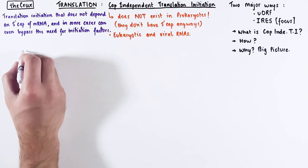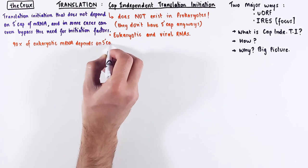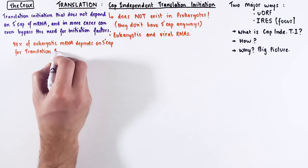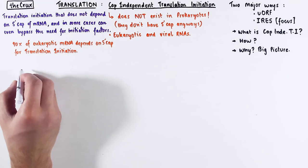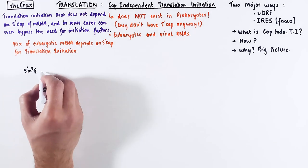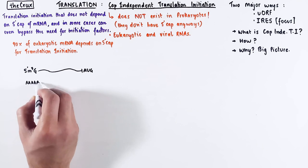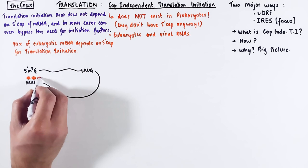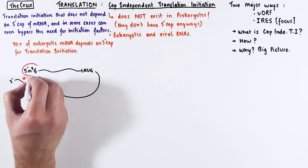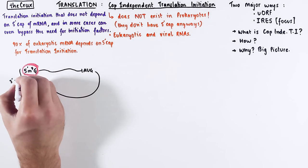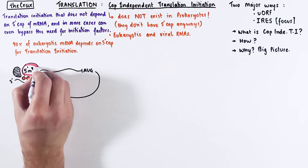We have discussed the canonical or typical translation initiation already, and 90% of the eukaryotic mRNAs depend on the 5' cap for translation initiation. The 5' end of the mRNA typically has a methylguanosine CAP, and the poly-A tail on the other end is decorated by poly-A binding proteins. The poly-A tail usually interacts with a bunch of initiation factors that bind to both the CAP and the poly-A tail, and they help to further recruit other factors.